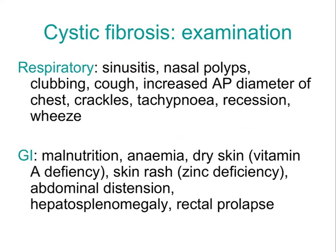On examination, you may see sinusitis, nasal polyps, clubbing, cough, increased AP diameter of the chest, crackles, shortness of breath, recession and wheeze. A child may look malnourished, anaemic, have dry skin due to vitamin A deficiency or a skin rash due to zinc deficiency. There can be abdominal distension, hepatosplenomegaly and rectal prolapse.